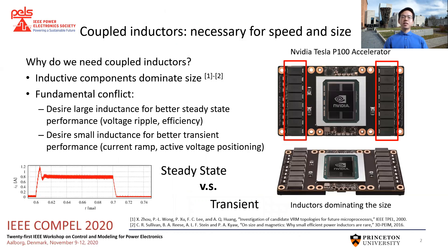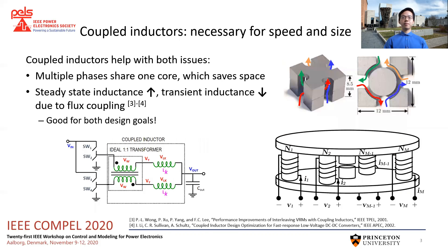In many modern converters, coupled inductors are the key to achieving smaller size and better performance. Inductive components can dominate the size occupied by a converter, such as in this Nvidia GPU. This restricts our achievable power density, and moreover, inductive components have a fundamental trade-off between steady-state and transient performance. However, in multi-phase converter designs we can leverage coupled inductors to help alleviate both of these issues.